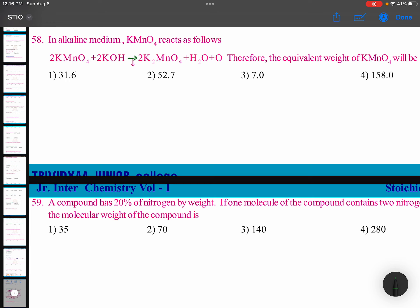For oxidizing agents and reducing agents, you can say for oxidants and reductants, equivalent mass is equal to molecular mass divided by number of electrons involved, number of electrons involved in that particular change.